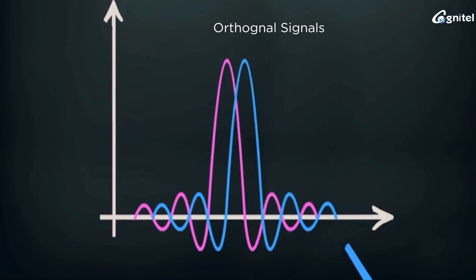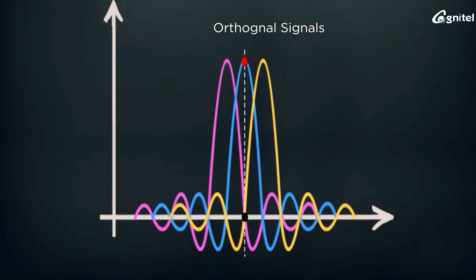At the peak point of signal waveform 2 in the middle, adjacent signals are at the null point. Similarly, peak points of signal waveform 1 have the other two at null point.